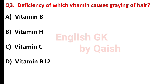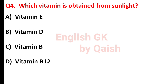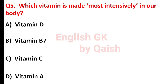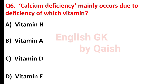Deficiency of which vitamin causes graying of hair? Answer is option D, vitamin B12. Which vitamin is absent from sunlight? Answer is option B, vitamin D. Which vitamin is made most intensively in our body? Answer is option A, vitamin D. Calcium deficiency mainly occurs due to deficiency of which vitamin? Answer is option C, vitamin D.